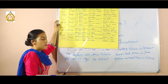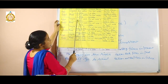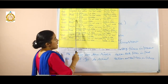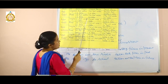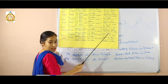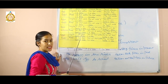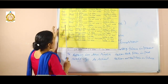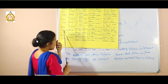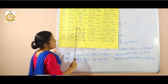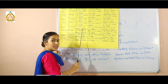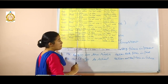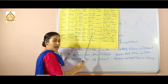Then comes simple future tense: 'I shall write a letter.' In future tense, we use 'shall' with 'I' or 'we', and 'will' with others, followed by the first form of the verb. Next is future continuous tense: 'I shall be writing a letter.' The structure is shall or will plus 'be' plus verb first form plus '-ing'.